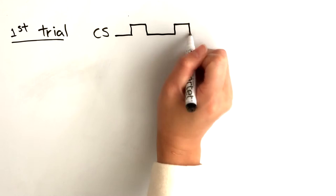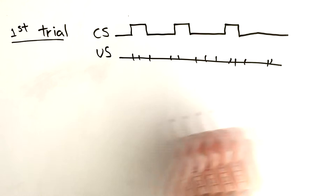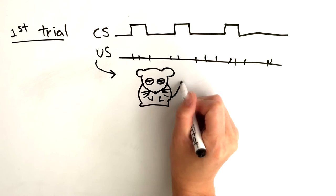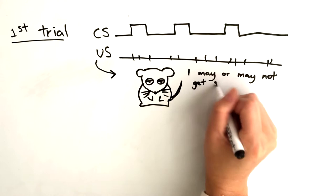The more that an unconditioned stimulus is presented in the absence of the conditioned stimulus, the poorer a predictor the conditioned stimulus becomes and the lower the rate of learning. Learning takes place at a faster rate whenever the conditioned stimulus successfully predicts the arrival of the unconditioned stimulus.